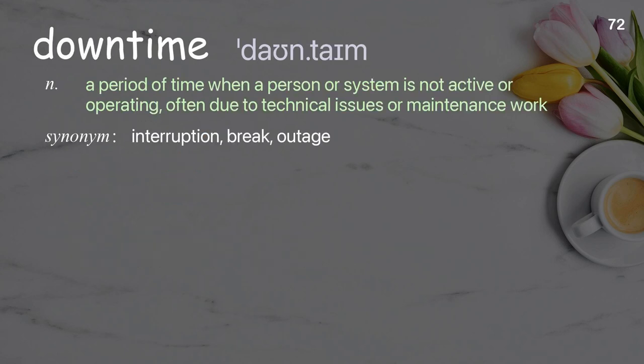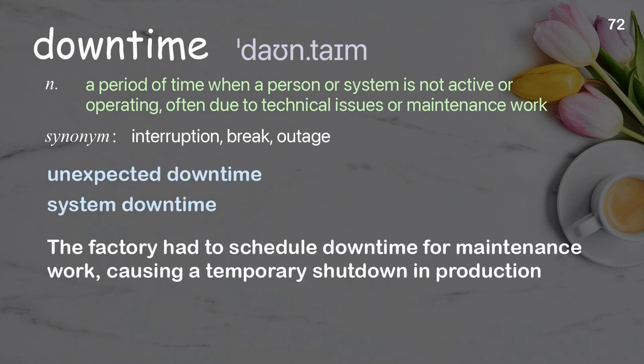Downtime: A period of time when a person or system is not active or operating, often due to technical issues or maintenance work. Examples: unexpected downtime, system downtime. The factory had to schedule downtime for maintenance work, causing a temporary shutdown in production.